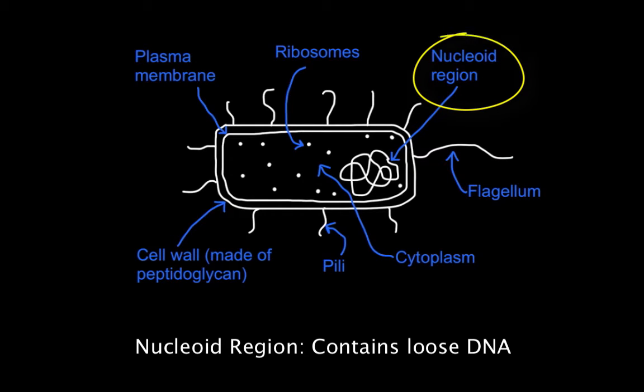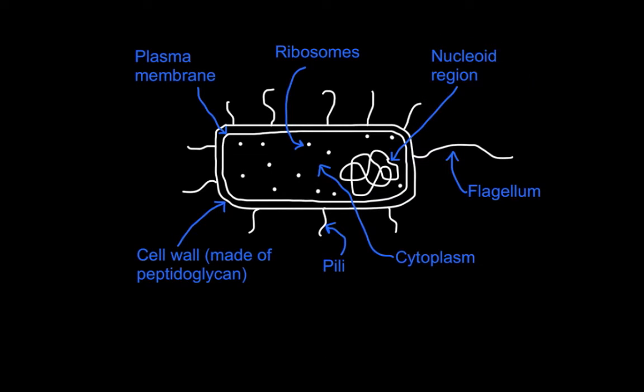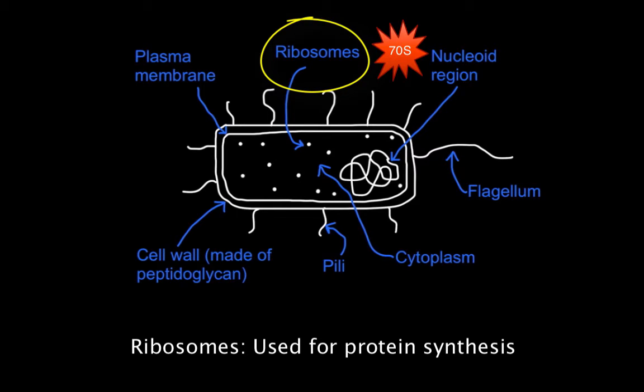The prokaryote has a nucleoid region which contains loose DNA not surrounded by a membrane. It's not a nucleus, but a nucleoid region. Finally, it has ribosomes used for protein synthesis.